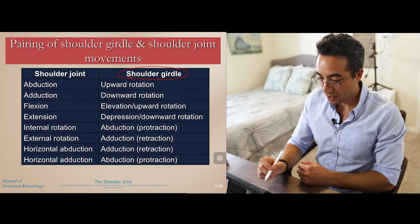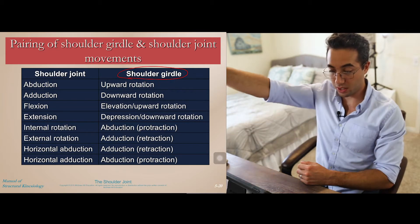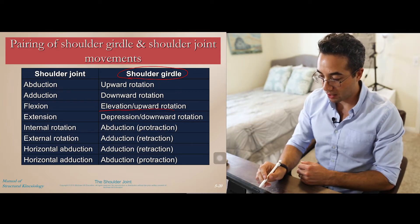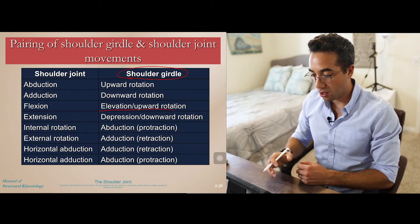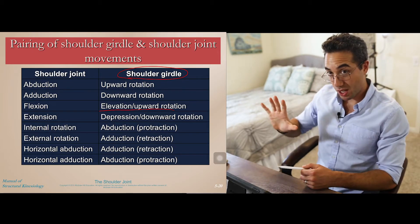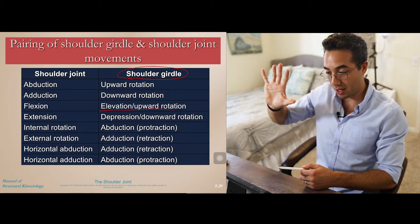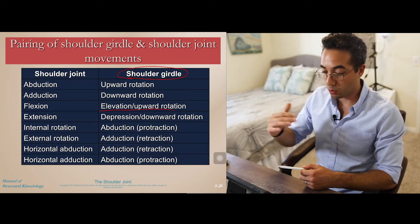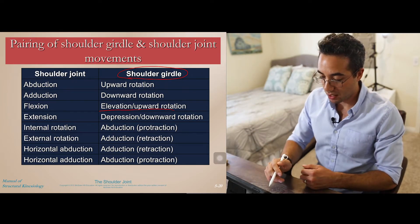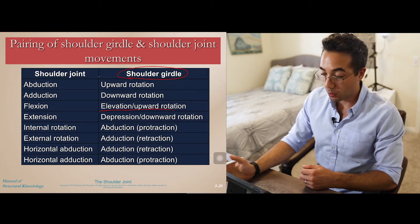Flexion of the shoulder joint — forward in the sagittal plane — is accompanied by elevation and upward rotation. So we have upward rotation of the scapula, but also elevation of it at the same time as you go through flexion. Extension would be the opposite: shoulder extension is accompanied by depression and downward rotation of the shoulder girdle.